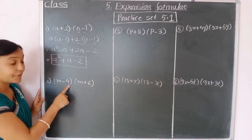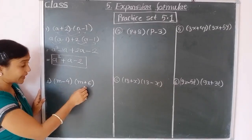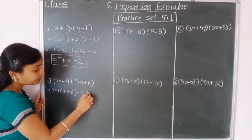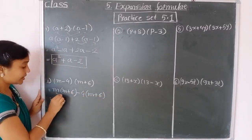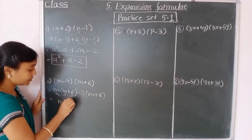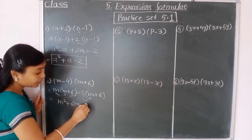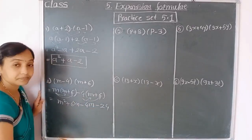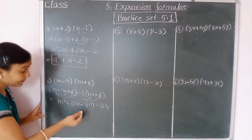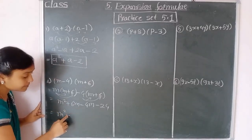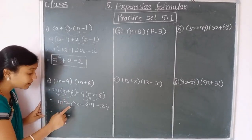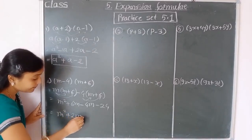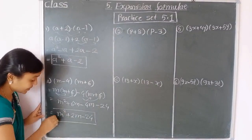Second example: m minus 4 into m plus 6. Again this bracket multiplied to this bracket: m into m plus 6, minus 4 into m plus 6. m into m gives m squared, m into 6 gives 6m, minus 4 into m gives minus 4m, minus 4 into 6 gives minus 24. The variable m is the same, so we solve: plus and minus, greater number is 6, so positive sign: 6 minus 4 gives 2m, minus 24. This is the expansion.